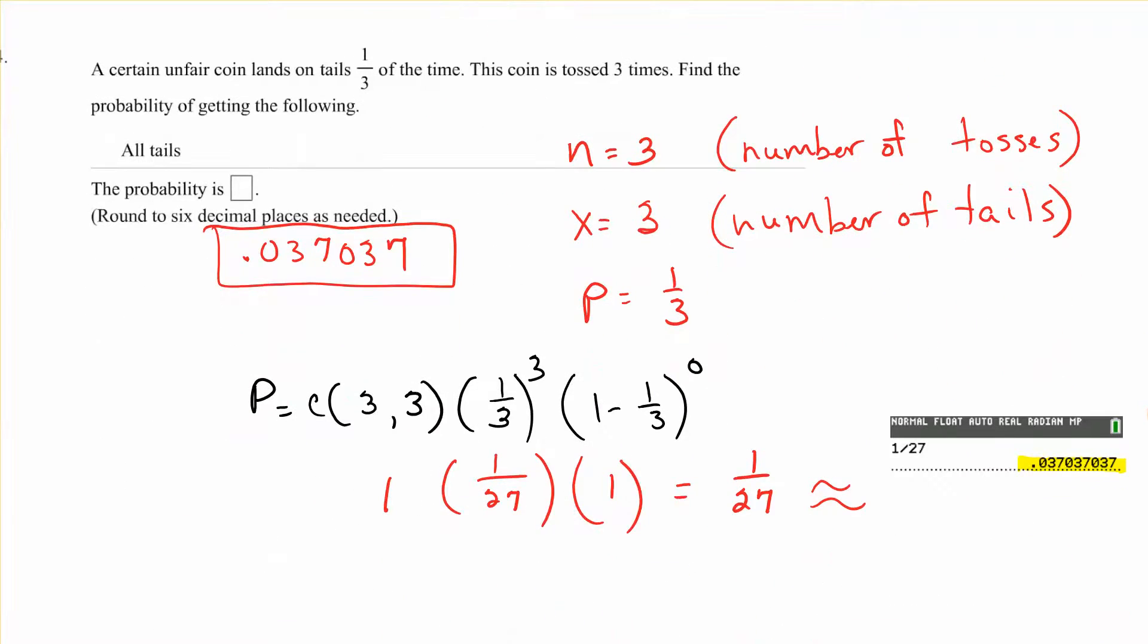A certain unfair coin lands on tails one third of the time. It's tossed three times. Find the probability of getting all tails. So n is 3, that's the number of tosses. X equals 3, the number of tails, which is what we're trying to get. Probability is 1 over 3. So let's plug all that in. The combination of 3 comma 3, times the probability raised to 3.